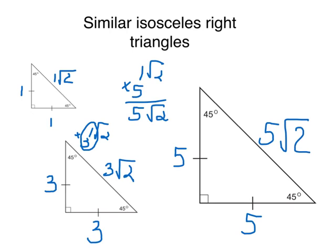As you can see, the pattern is this: 1, 1, 1 root 2; 3, 3, 3 root 2; 5, 5, 5 root 2.